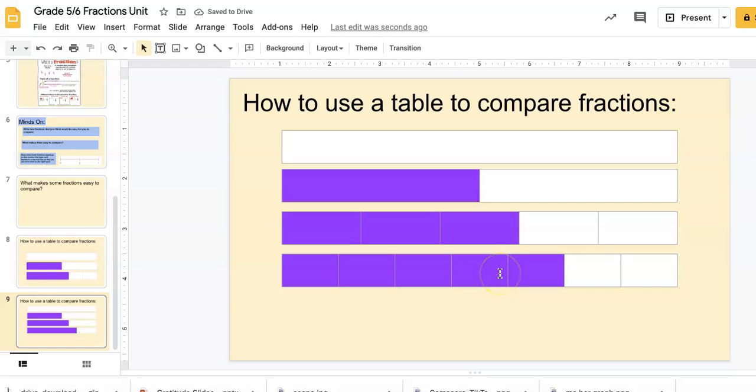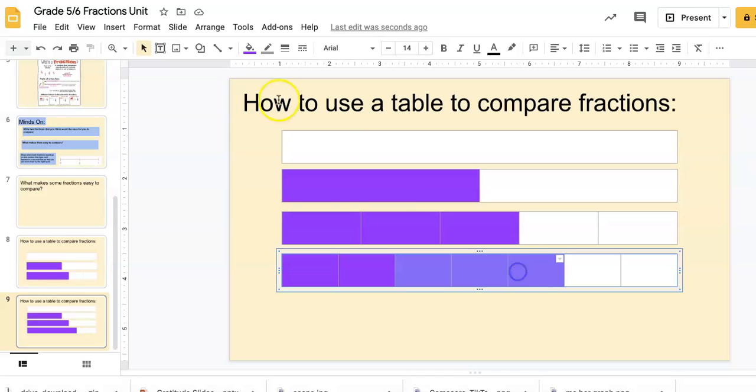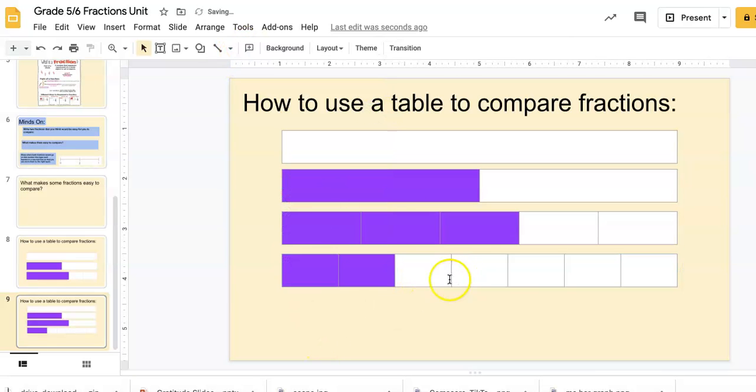Maybe I wanted to find out if two-sevenths was larger or smaller than three-fifths. I can turn those back to white, color two-sevenths, and see that two-sevenths is smaller than three-fifths. That's an easy way you can compare fractions in Google Slides using tables.